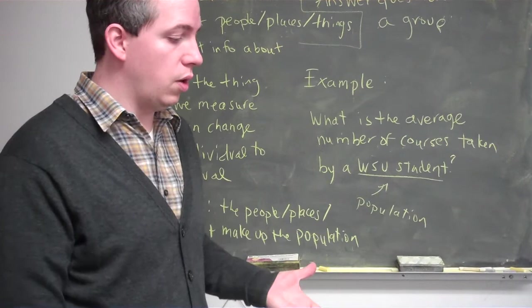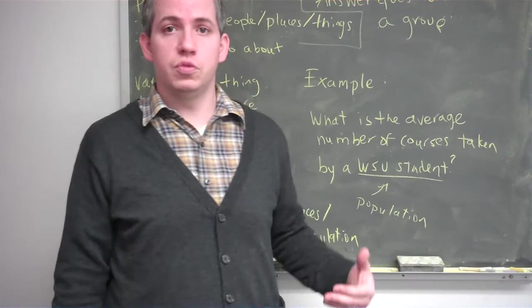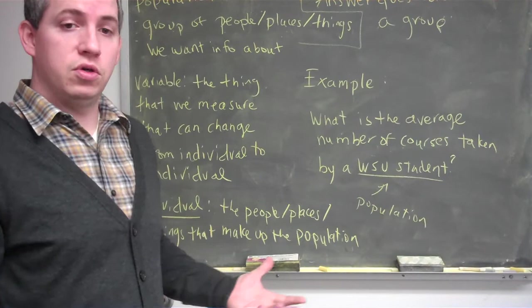If I said I want to know how tall the filing cabinets are, the height of the filing cabinet would be the variable, all filing cabinets would be the population, and the individuals would be individual filing cabinets — like the one standing next to me. So, one of the questions you're going to ask now is: how do we actually go out and collect our data? Because that's what statistics does — we have to go and collect our data.